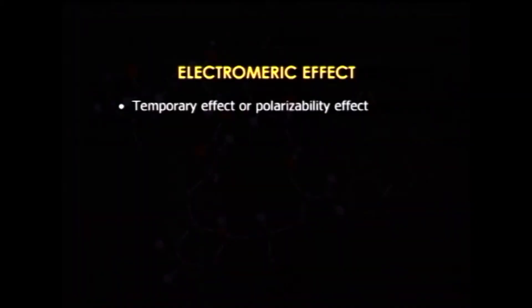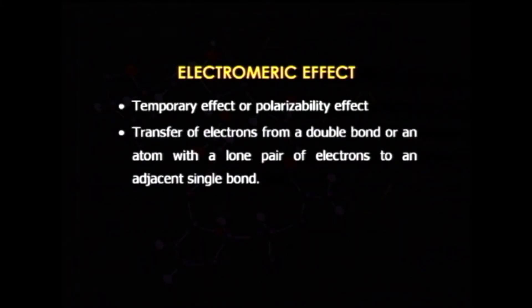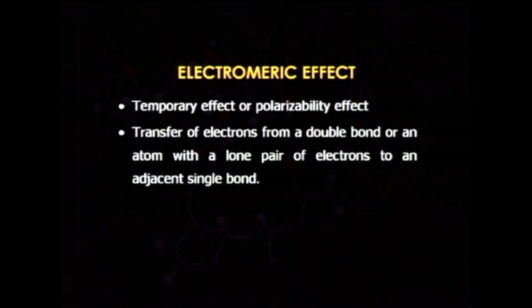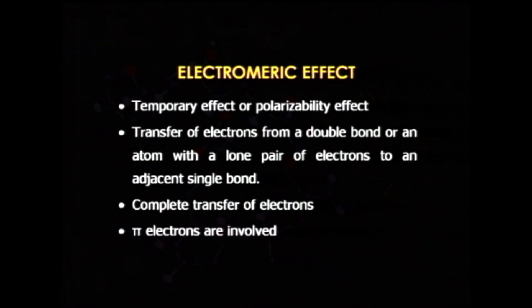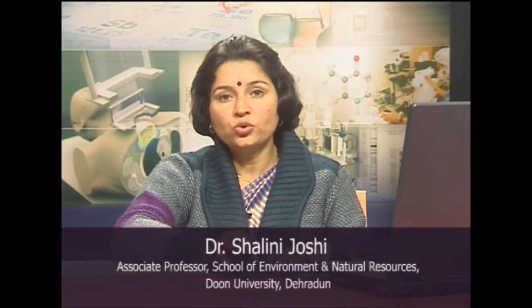Electromeric effect is a temporary effect, so it is called the polarizability effect. It involves transfer of electrons from a double bond or an atom with a lone pair of electrons to an adjacent single bond. This involves complete transference of electrons — it involves complete transfer. Pi electrons are involved and this effect is temporary; it is shown only in the presence of the attacking reagent.